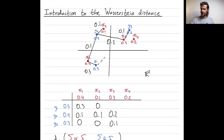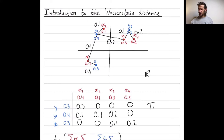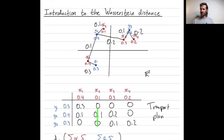Because all of the mass needs to be accounted for, the sum of each column must match the red measure: 0.4, 0.1, 0.3, and 0.2. And because all of the blue mass needs to be counted for, the sum of each row must match the blue measure: 0.3, 0.4, and 0.3.